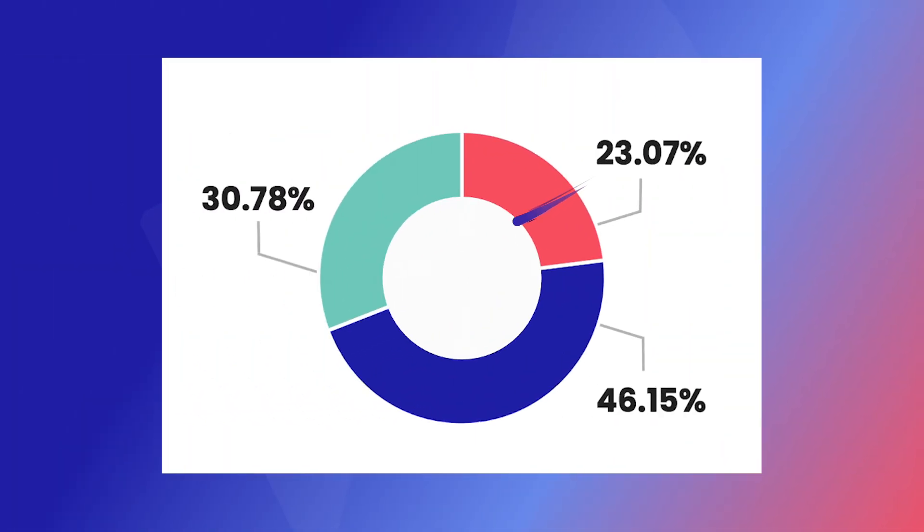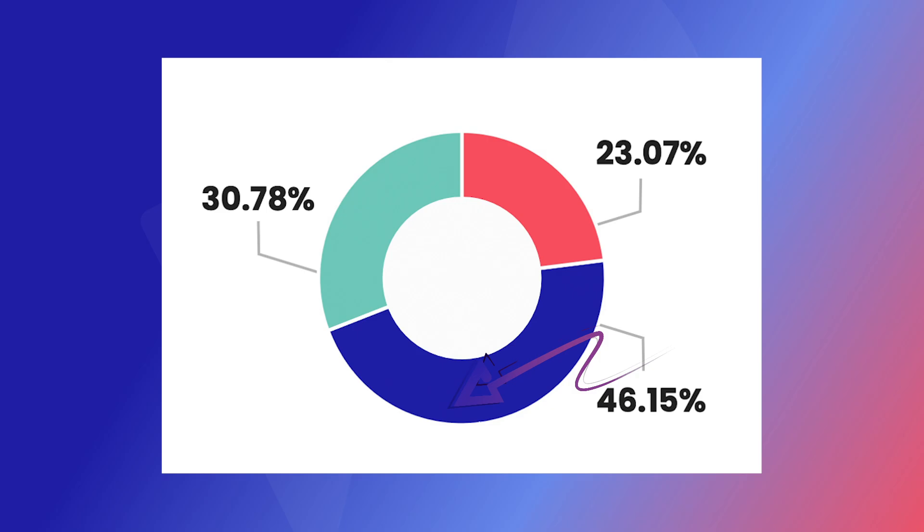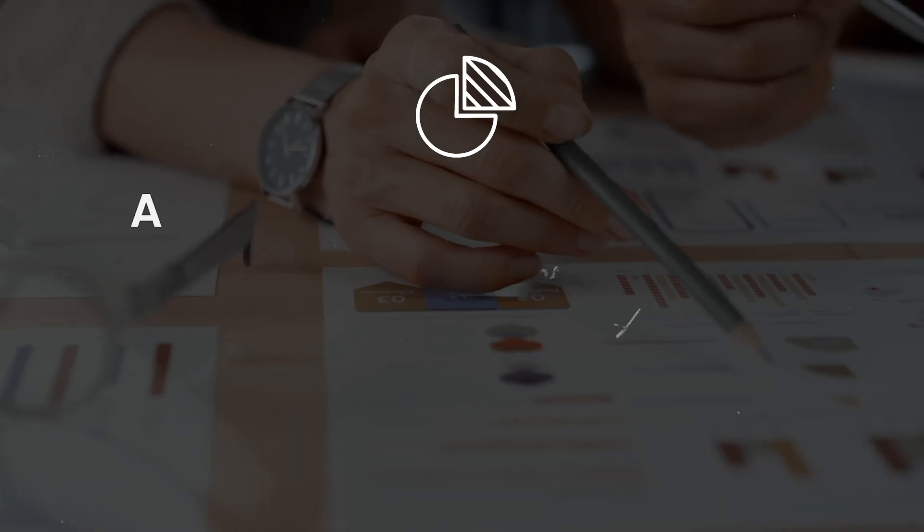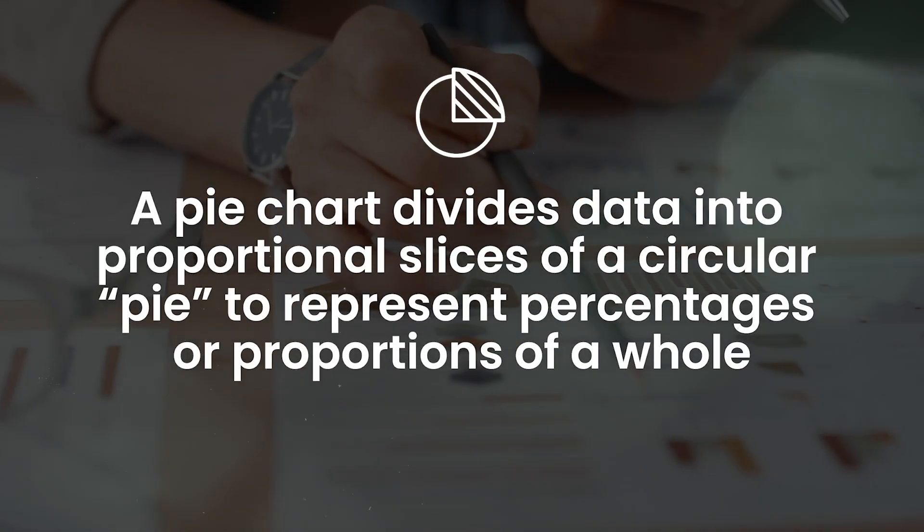Now let's move on to somewhat of a controversial option in the finance space, and that's pie charts. A pie chart divides data into proportional slices of a circular pie to represent percentages or proportions of a whole. This might be a great option if you want to show the breakdown of a whole into parts like revenue by region, expense categories, or allocation of a budget.